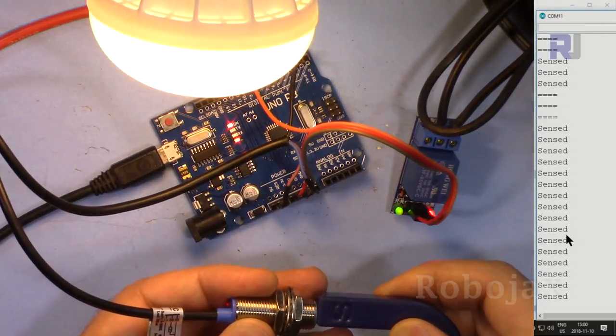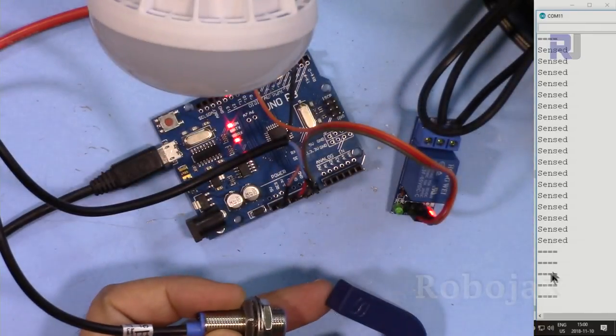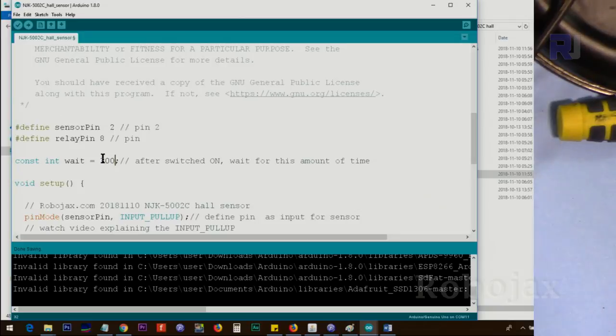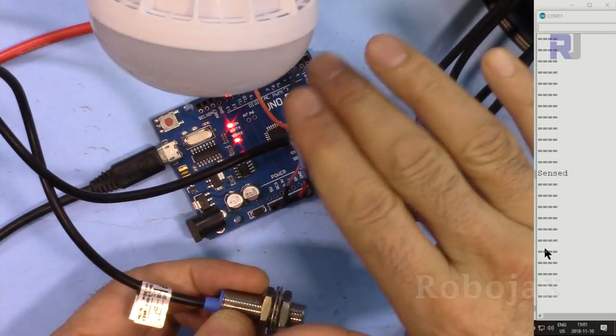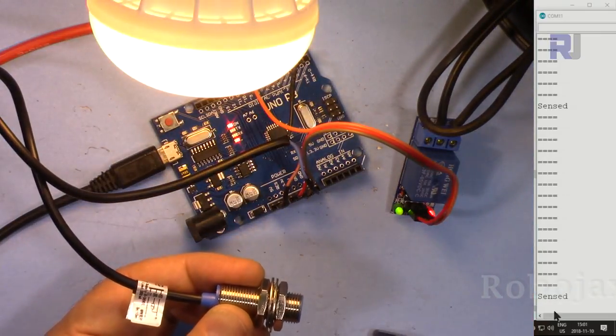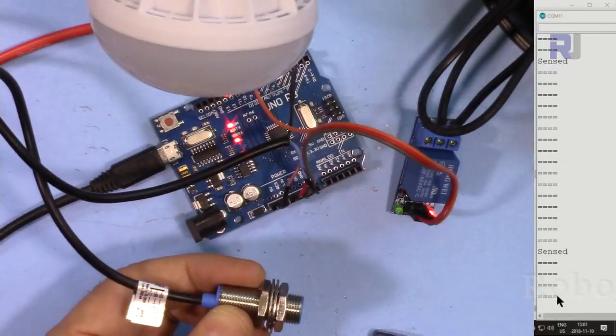If I'm holding it, it continuously shows sensed. The amount of time that is running at the moment was zero. If I make this three seconds, now this is set at three seconds. If I remove it within three seconds, it's still on.